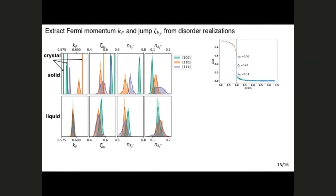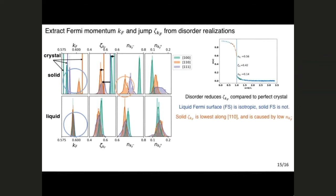So this is what happens. So here I am showing the Fermi momentum, the magnitude of the jump, and the momentum distribution right before and after the jump. So these things are shown on the right here. So the color encodes what direction you're looking, and the first row is solid, the second row is liquid, and these lines next to the solid results are the perfect crystal results. So first of all, you see that when you introduce disorder into your lattice, it makes the crystal a little bit more like the liquid. So the Fermi surface becomes more spherical, and the magnitude of the jump increases a little bit.